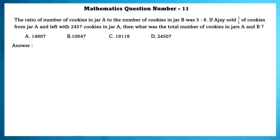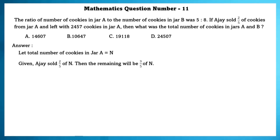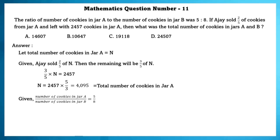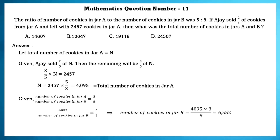Mathematics question number 11. The ratio of cookies in jar A to jar B was 5 is to 8. Ajayi sold 2 by 5 of cookies from jar A and is left with 2,457 cookies. Let total cookies in jar A be n. The remaining is 3 by 5 of n equals 2,457, giving n equals 4,095. Using the ratio, cookies in jar B equals 6,552. Total cookies in jar A and B is 10,647.